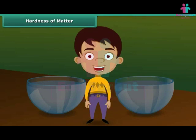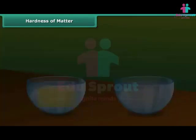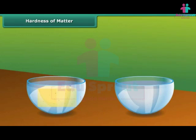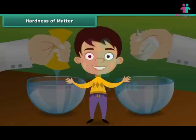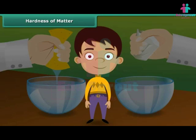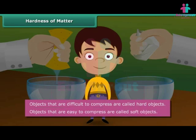Let us perform a small activity to understand the concept of hardness or softness of a material. Take a sponge soaked in water, then take a stone drenched in water, and try to squeeze both to remove water. Which of the two are you able to squeeze? Of course, the sponge. You cannot squeeze the stone. Objects that are difficult to compress are called hard objects. Objects that are easy to compress are called soft objects.